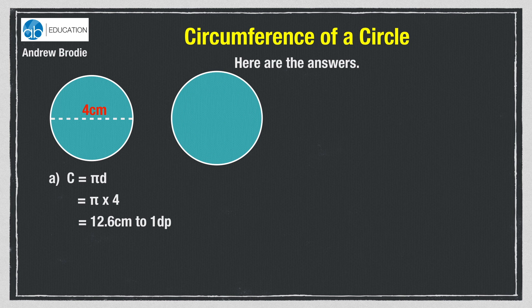Question b said the circle has a radius of 2.4cm, so you can use C equals 2πr to reach the answer 15.1cm.